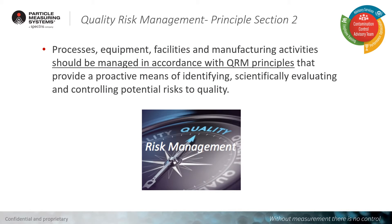In Annex 1, Principles Section 2, it states: processes, equipment, facilities, and manufacturing activities should be managed in accordance with quality risk management principles that provide a proactive means of identifying, scientifically evaluating, and controlling potential risks to quality.